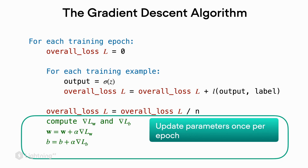Let's not get ahead of ourselves and see how stochastic gradient descent works. In the previous video we saw the gradient descent algorithm, where we did a parameter update after each epoch. Now stochastic gradient descent is the flavor of gradient descent with essentially more frequent updates.